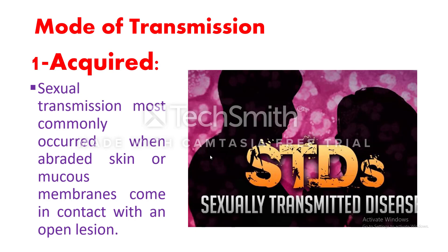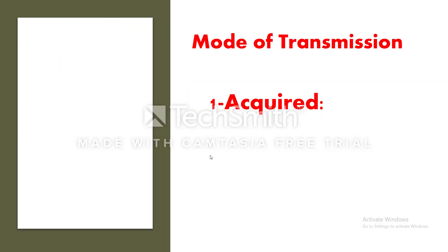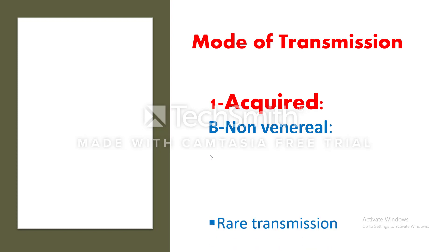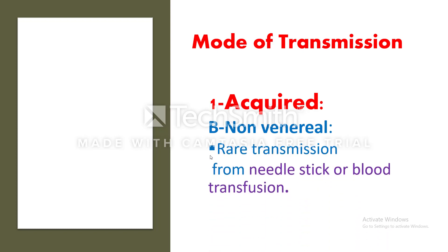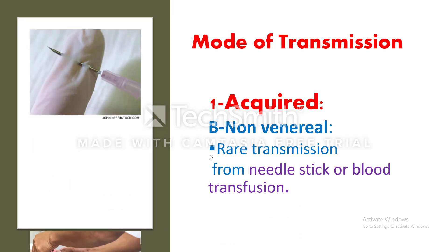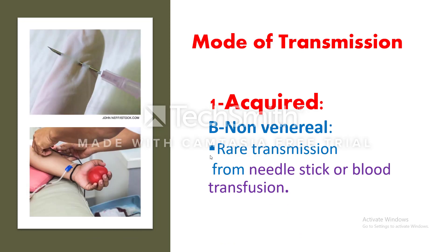Sexual transmission most commonly occurs when abraded skin or mucous membrane comes in contact with an open lesion. Non-venereal acquired transmission is rare but can occur from needle stick injury or blood transfusion.